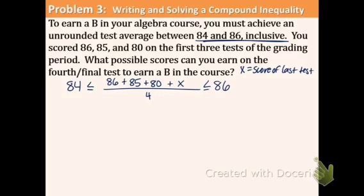I'm going to show you how to do this without separating this time, because you might prefer that. So let's combine like terms. 86 plus 85 plus 80 is 251. Everything else comes down.